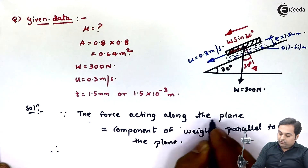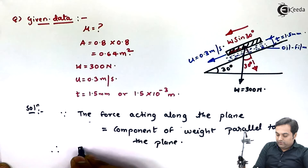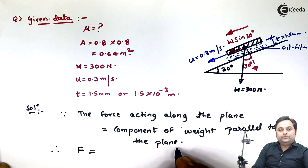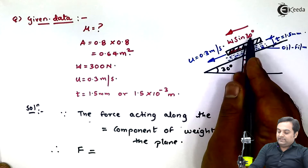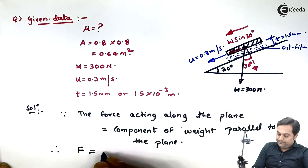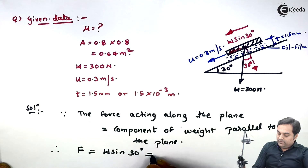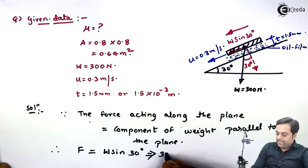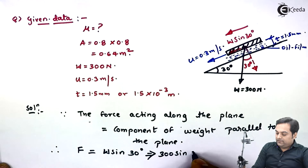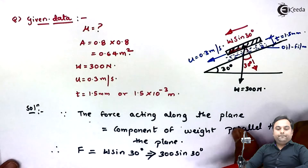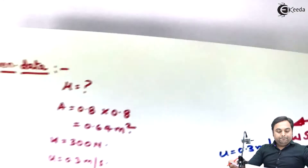The force acting along the plane F equals the component of weight parallel to the plane, which is W sin 30°. Substituting W = 300 N: F = 300 × sin 30° = 150 N.